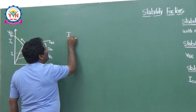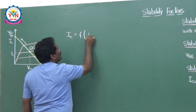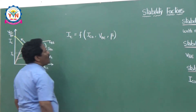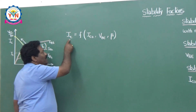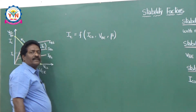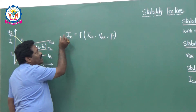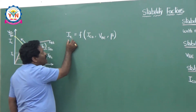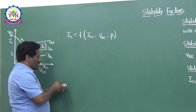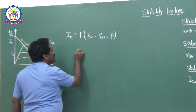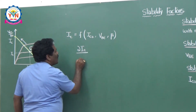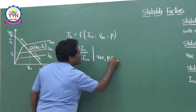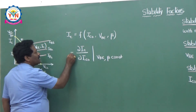The collector current IC is a function of three parameters: the reverse leakage current IC0, the base-to-emitter voltage VBE, and beta. I would like to calculate the dependence of IC on each of these factors — that is nothing but the stability factor. So I would like to calculate: the change in IC due to change in IC0; the change in IC due to change in VBE; and the change in IC due to change in beta. The first stability factor S is defined as the rate of change of IC with respect to IC0, keeping VBE and beta constant.